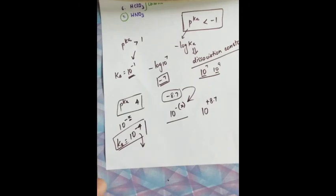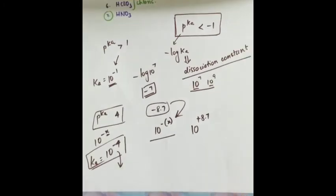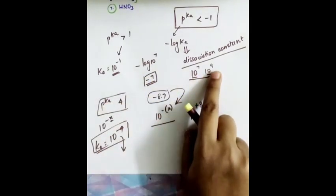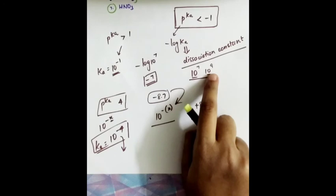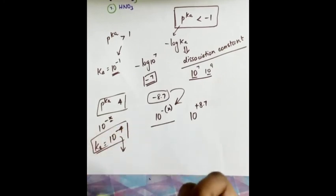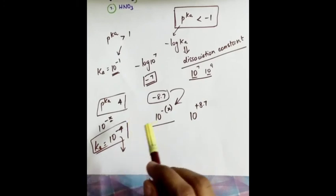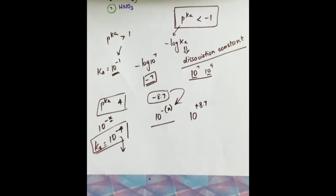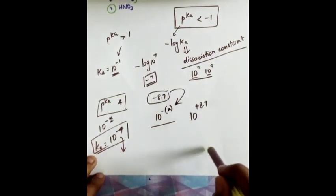Higher dissociation constant means stronger acid, because the acid can easily dissociate — for example Ka = 10⁹. In organic chemistry, you can compare pKa values to reason why, for example, 4-nitrophenol is more acidic than 2-nitrophenol. Compare pKa values to determine which is the stronger acid.